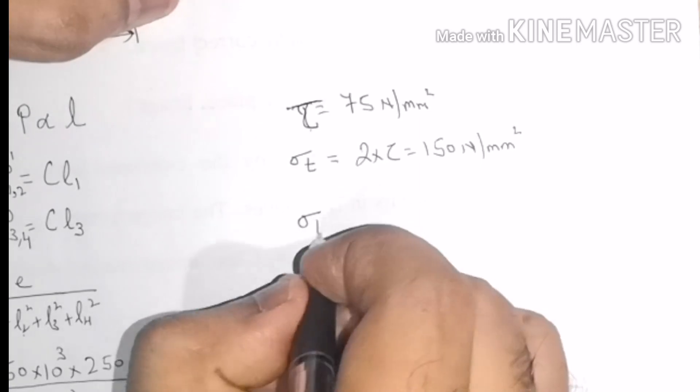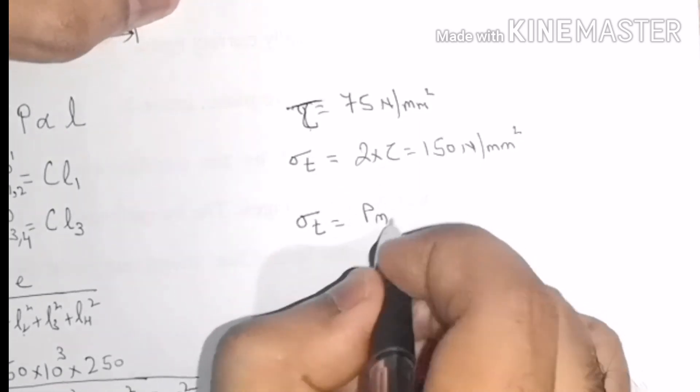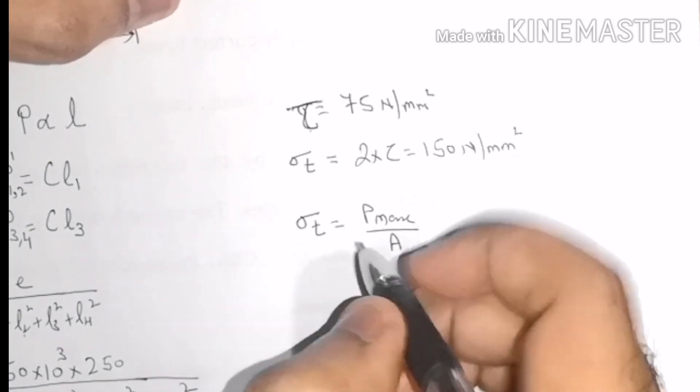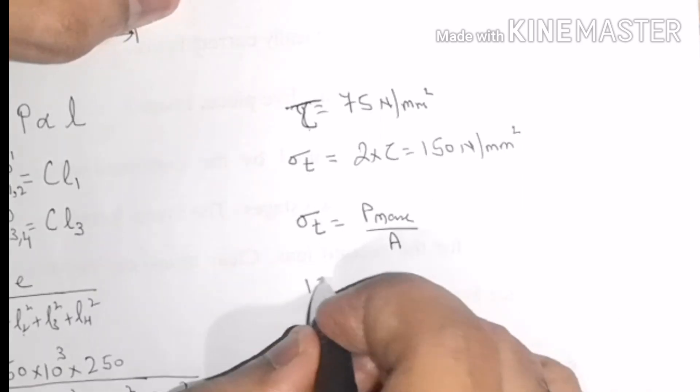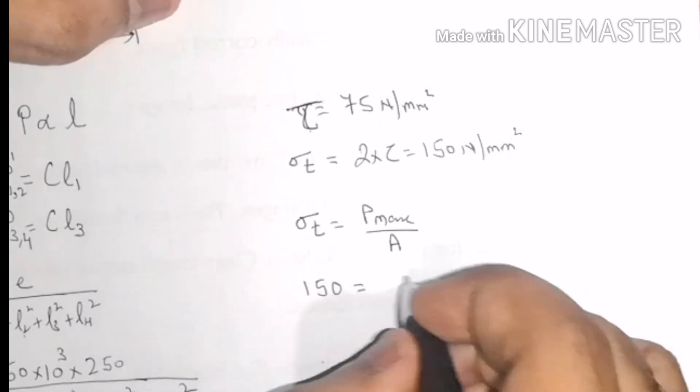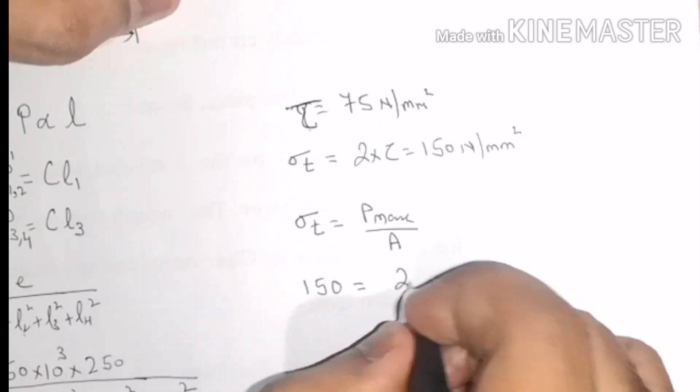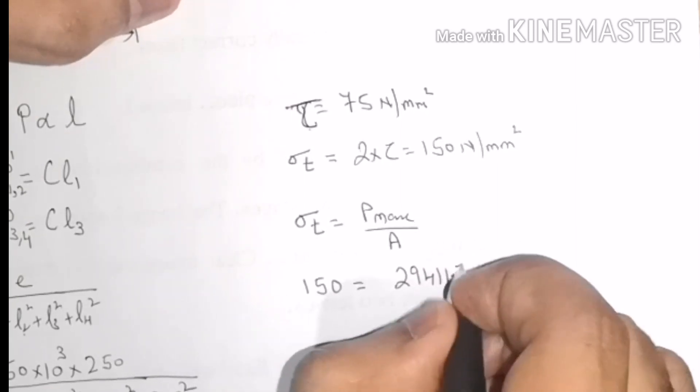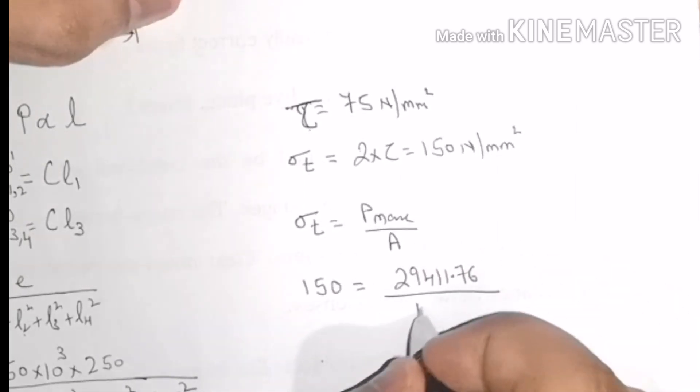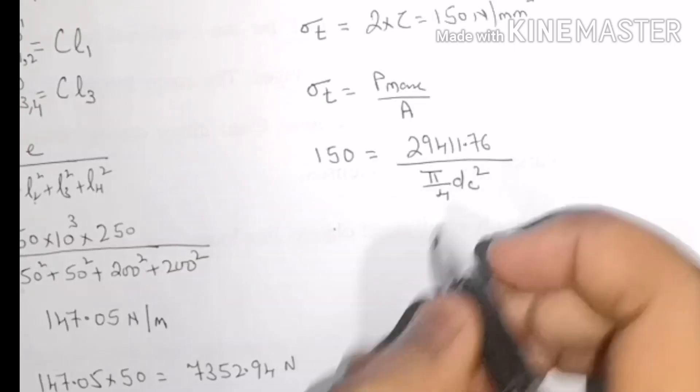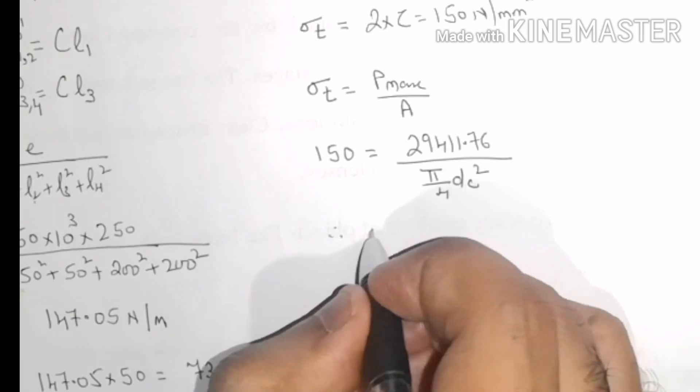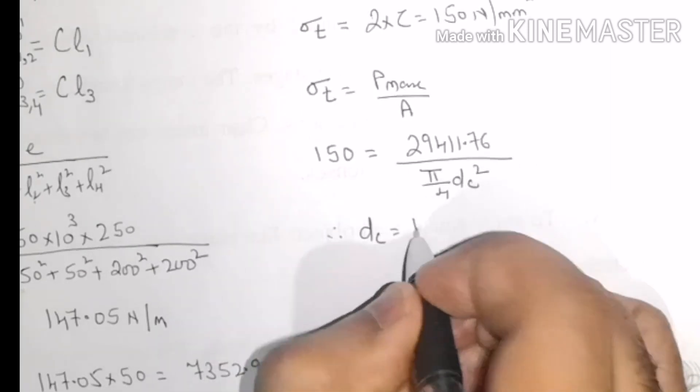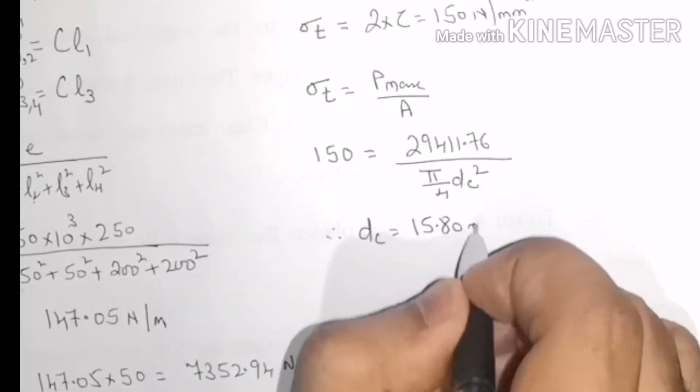Now, σt = Pmax / A. So σt = 150, Pmax = 29411.76, and A = (π/4) × Dc². On calculation, we get Dc = 15.80 mm.